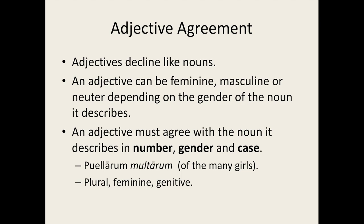Take this example: puellarum multarum, meaning 'of the many girls.' Puellarum is plural, feminine, and in the genitive case. Therefore, multarum, as it describes puellarum, must also be plural, feminine, and in the genitive case.